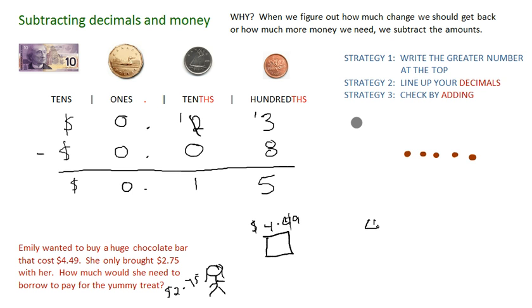So let's subtract. $4.49, the cost of the chocolate bar. She only has $2.75. If we subtract these two, then we'll figure out how much money she needs to borrow. My greater number is at the top. My decimals are lined up, and my other place values are lined up as well. Nine pennies subtract five pennies is four.